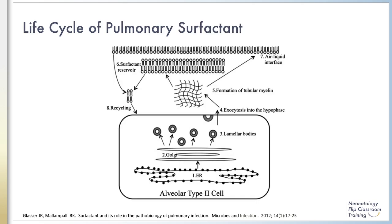This figure demonstrates a magnified view of surfactant production. The bottom half of the slide represents the type 2 pneumocyte in which surfactant production occurs. Surfactant is produced mainly in the type 2 cell; components of surfactant are made in polyribosomes within the endoplasmic reticulum and then modified in the Golgi apparatus. The rough endoplasmic reticulum makes proteins and the smooth endoplasmic reticulum makes phospholipids. The components of surfactant are then packaged into lamellar bodies in the cytoplasm.